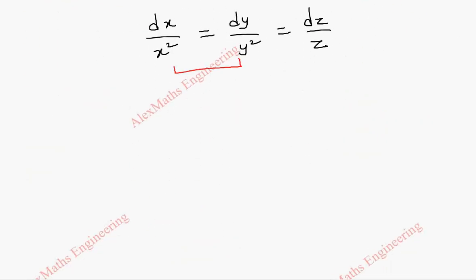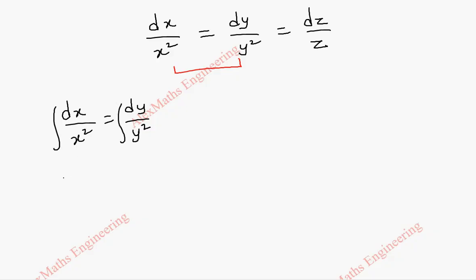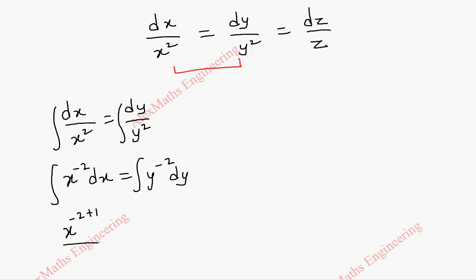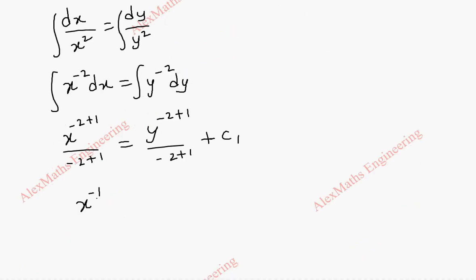Taking the first two pairs, we are going to integrate. This is already in variable separable form, with x terms on one side and y terms on the other side. When we take this to the numerator it is x power minus 2 dx, and here it is y power minus 2 dy. Using the exponent formula, x power n plus 1 by n plus 1, on the other side y power minus 2 plus 1 by minus 2 plus 1, with constant c1.